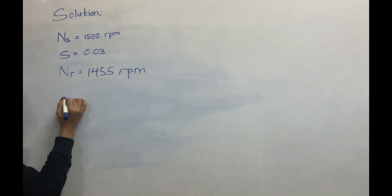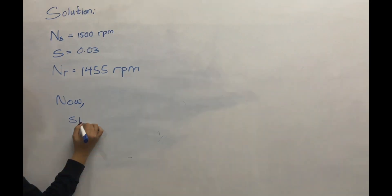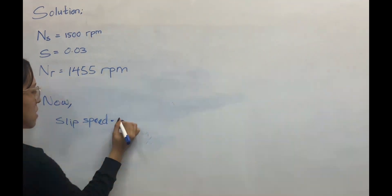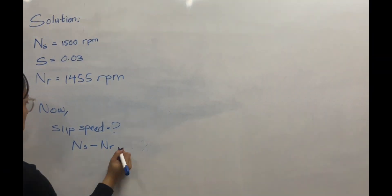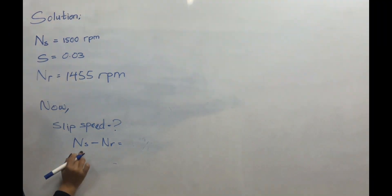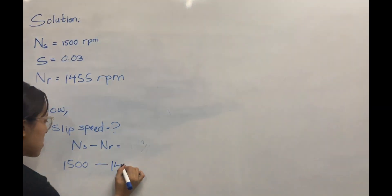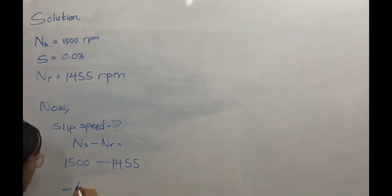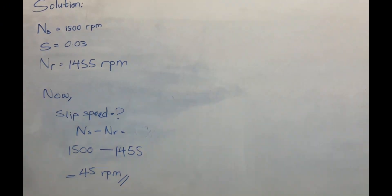Finally, the slip speed is calculated using the formula: slip speed = Ns − Nr. Substituting Ns = 1500 and Nr = 1455, we get the slip speed as 45 RPM. These are all the parameters required by the question. Thank you.